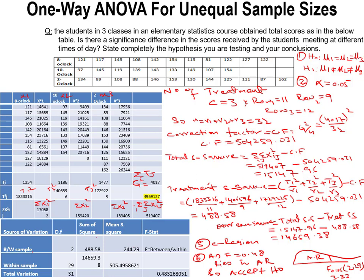After subtracting the correction factor, the treatment sum of squares is 488.58. The error sum of squares is total sum of squares minus treatment sum of squares: 15,147.09 minus 488.58, giving an error sum of squares of 14,659.38.